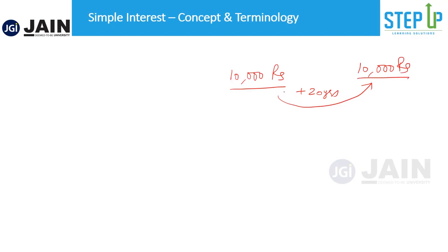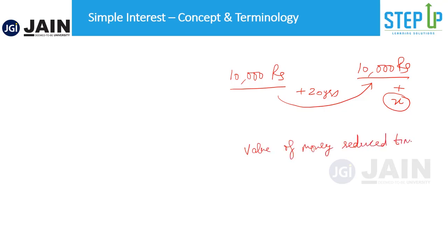You say, I can lend you 10,000 rupees, you can return it to me after 20 years, but you're not going to pay me just 10,000 rupees — you're going to pay me 10,000 rupees plus some additional amount. Why? Because of inflation. Today I can buy a piece of furniture at 10,000 rupees, but after 20 years that same furniture is going to cost a few lakhs. The value of money reduces over time. So this additional money that you want to get after lending is your interest — it's sort of rent on your money.